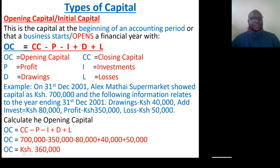So, OC stands for opening capital, CC for closing capital, P for profit, D for drawings, I for investments, and L for losses. We look at an example.